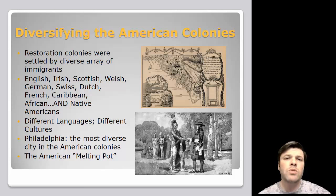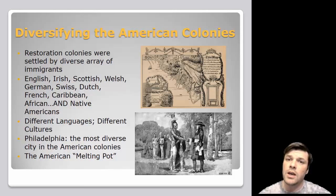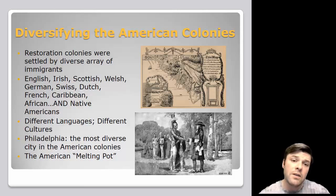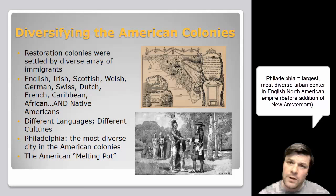Right now, I want you to understand how diverse Pennsylvania was as a colony. Part of the reason it was probably the most diverse colony in the empire was because William Penn advertised for immigrants in lots of different languages. He got English colonists, Irish, Scottish, Welsh, German, Swiss, Dutch, French — people from the Caribbean even came up. Africans were imported as a labor force, and of course Native Americans. You've got lots of different people living under one roof, lots of different languages spoken and cultures. And at the center of all of this is the biggest and probably the most diverse urban center in the colonies — Philadelphia.